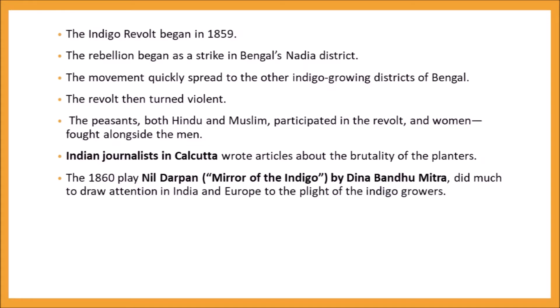The Indigo Revolt began in the year 1859. The rebellion began in Nadia district in Bengal, where the peasants refused to plant indigo crops. The movement quickly spread to other indigo-growing districts of Bengal, and the revolt turned violent. Both Hindu and Muslim peasants participated, and even women took part actively. Indian journalists in Calcutta wrote articles about the arrogant behavior of the British officers towards the peasants.